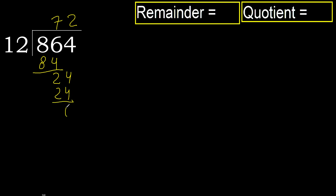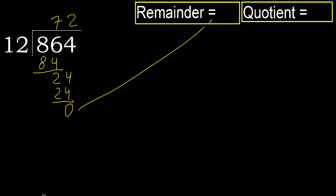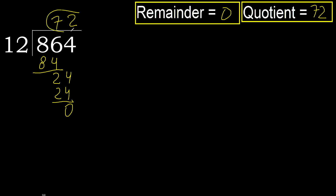Ok, subtract. Next, there is no remaining number, therefore finish. The remainder is 0. Therefore, 864 divided by 12 is 72.